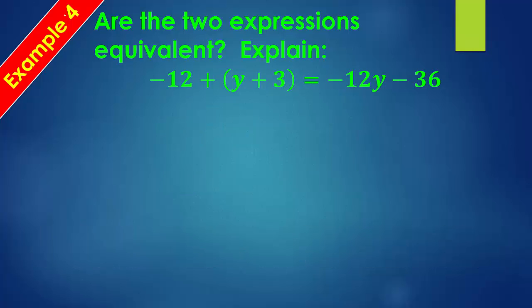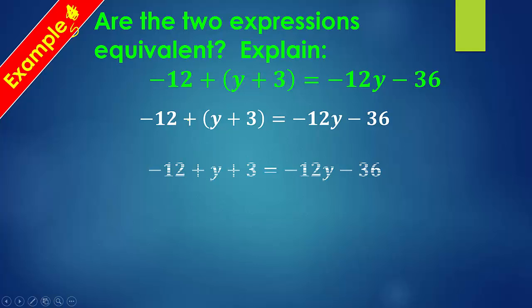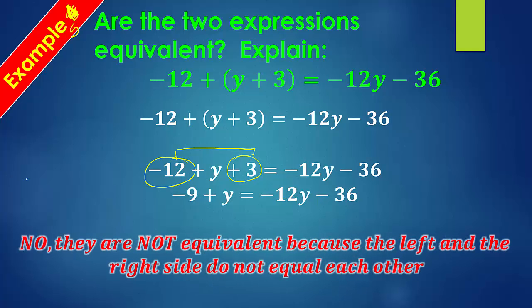So, one last example before I let you go. This should be example 5. Same type of problem. Are the two expressions equivalent? Explain. So, I have negative 12 plus the quantity y plus 3 equals negative 12y minus 36. A common mistake that happens here. So, pay attention. You might want to say, well, this is outside the parentheses. So, I'm going to just multiply that, like you said, and distribute. The problem with that is, it's not outside the parentheses. It's negative 12 plus this together. It's not negative 12 times that together. So, we can just simply remove the parentheses. Because, when we add these together, it's still the same. And, then we would combine these like terms. Because, we have a positive 3 and a negative 12. Which would give us negative 9 plus y. Now, that's as simplified as it can get. Equals negative 12y minus 36. So, no. They are not equivalent because the left and the right side do not equal each other. In other words, they're not the same.